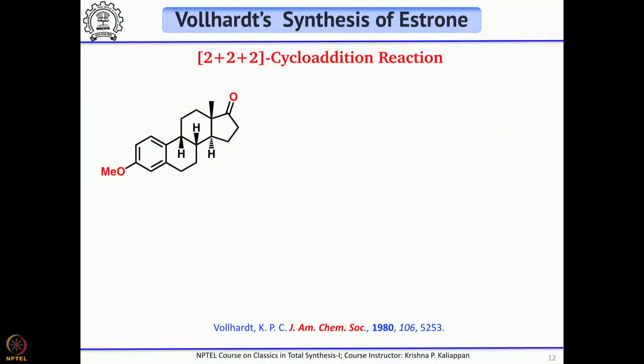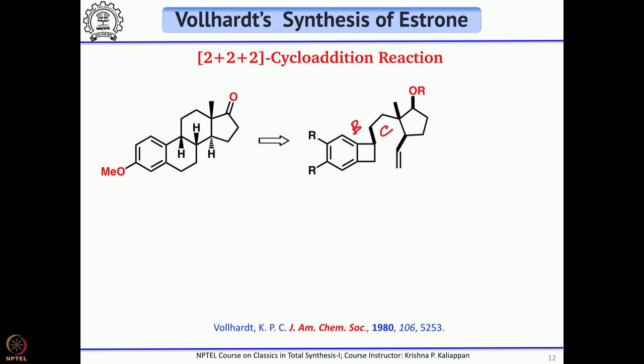The third synthesis of estrone involves a 2+2+2 cycloaddition of three triple bonds — also called cyclotrimerization — where three triple bonds trimerize to form an aromatic ring. It is well known in the literature that cobalt carbonyl, cyclopentadienyl cobalt carbonyl, or Wilkinson's catalyst can achieve this type of 2+2+2 cycloaddition. The strategy is: the B and C rings will be obtained by an intramolecular Diels-Alder reaction. When heated, it first undergoes intramolecular electrocyclic ring opening of cyclobutene, followed by a 4+2 intramolecular Diels-Alder (IMDA type 1) reaction.